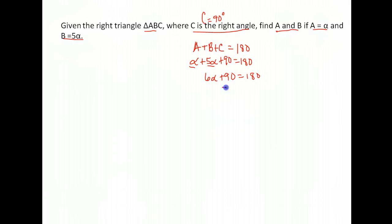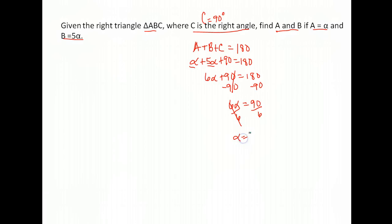Combining like terms: we have 1 alpha and 5 alpha, giving us 6 alpha, plus 90 equals 180. Subtract 90 from both sides and we get 6 alpha equals 90. Divide both sides by 6 — 90 divided by 6 gives us alpha equals 15.